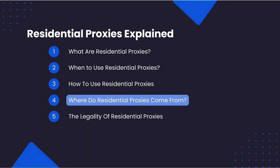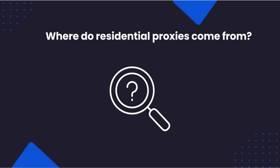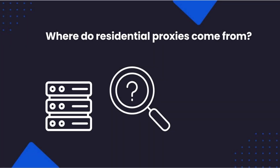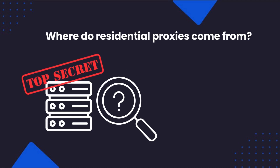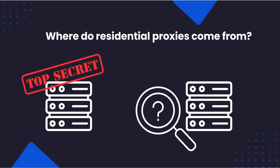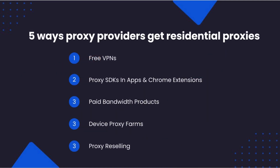Where proxy providers get their residential proxies can be a bit opaque. Some proxy providers treat it as a closely held secret, whilst others are very open about where they get their proxies. In truth, there are five main ways proxy providers get their residential proxies: free VPNs, proxy SDKs in apps and Chrome extensions, paid bandwidth products, device proxy farms, and proxy reselling.